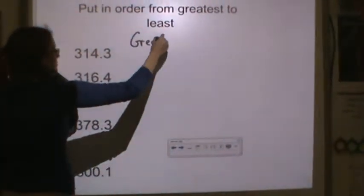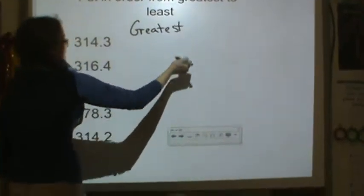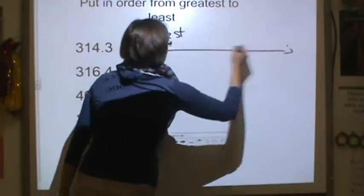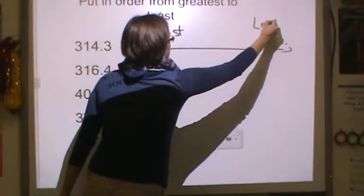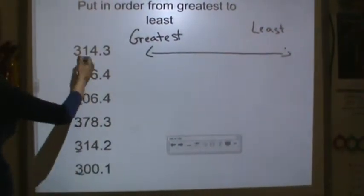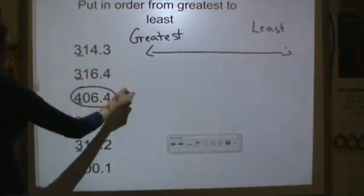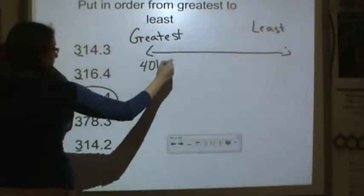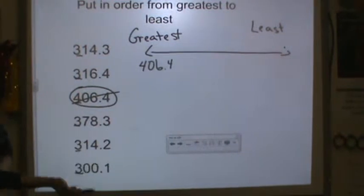So we need the greatest number here, and then we're going to go to the least number here. So the greatest number, if I look at my hundreds place, because I started from the left, my greatest number is 406 and 4 tenths. I've used that, so I'm going to cross it out.